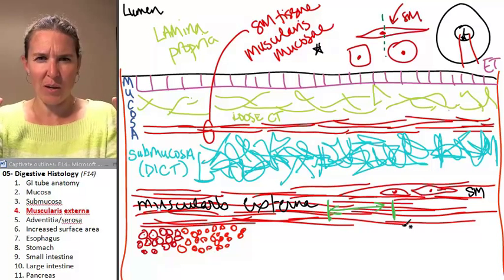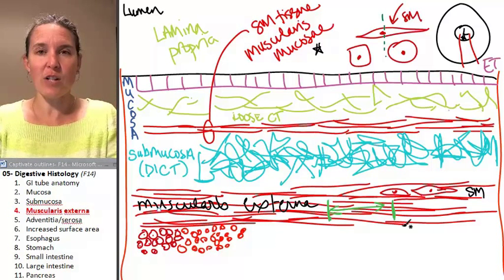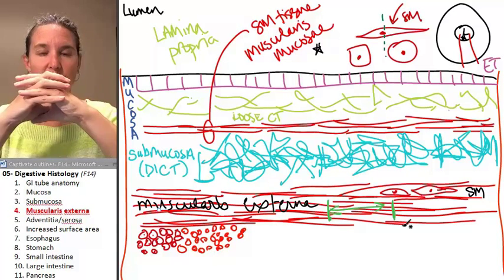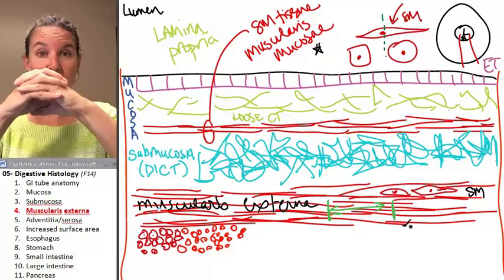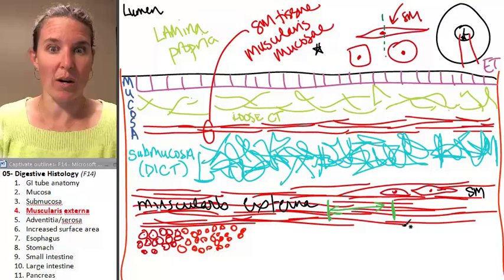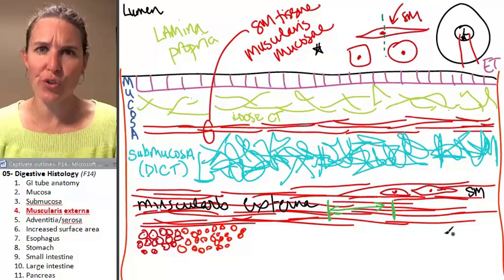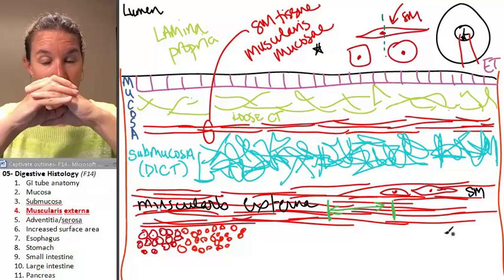Because muscle tissue, its entire function is based on the fact that it is contractile tissue. So it does shorten and when it is oriented in this kind of long circular way, it's going to shorten and decrease the diameter.